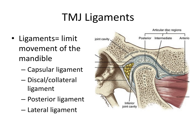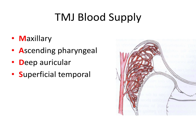The board exam frequently asks about blood supply to the TMJ, so remember the acronym MADS: the Maxillary artery, Ascending pharyngeal artery, Deep auricular artery, and Superficial temporal artery. There are more vessels than this, but these are the ones to know for the board exam — just remember MADS.